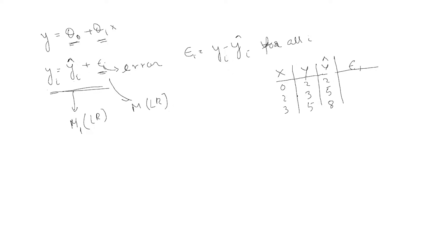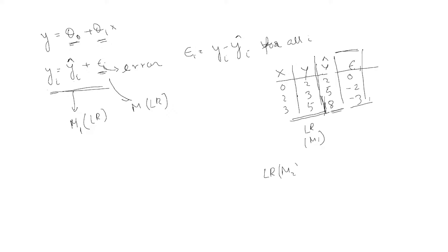These are your x and y values, and these are your epsilon (error) values. Your first model M1 is linear regression trained on x and y, giving you the prediction y-hat. Now check the error for each data point — y minus y-hat — for example, three minus two, five minus eight and so on. Your y is basically prediction plus error.